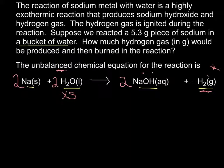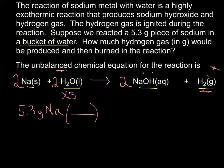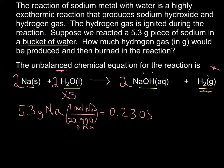We're going to start with our mass of sodium and we need to get into mole world, because that's where we can use our balanced chemical equation. So I'm going to convert our sodium metal to moles. Looking on the periodic table, sodium is 22.990 grams per 1 mole of sodium. Doing the math: 5.3 divided by 22.990 gives us 0.23054 moles of sodium. That gets us into mole world.